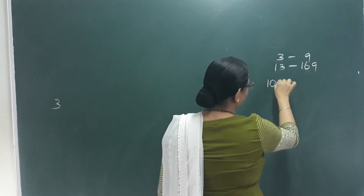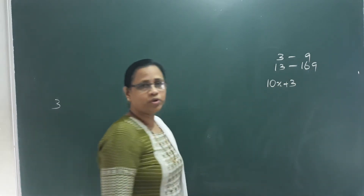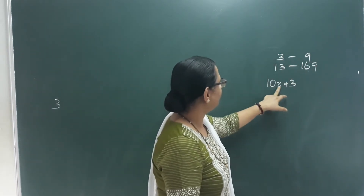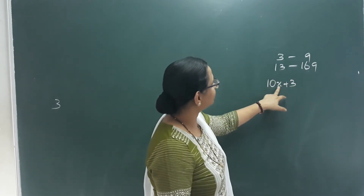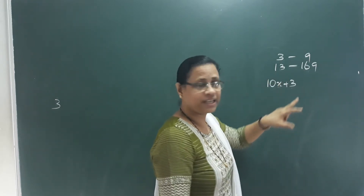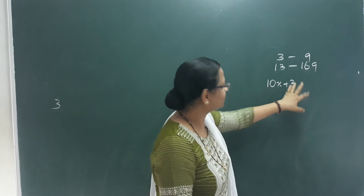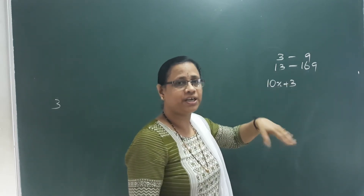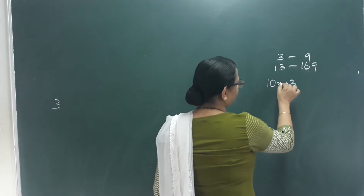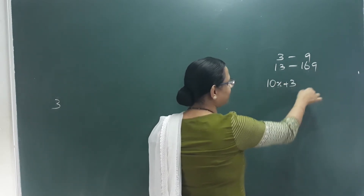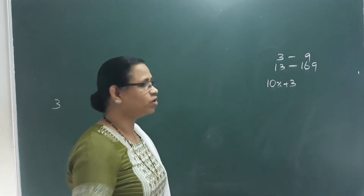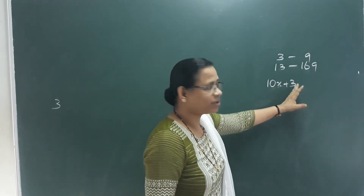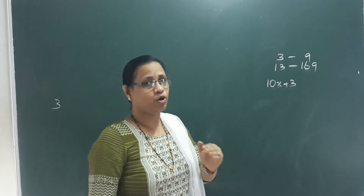What is the natural number ending in 3? We write it as 10x plus 3. When x equals 0, it's 3. When x equals 1, it's 13. When x equals 2, it's 23. This is the standard form of a 2-digit number ending in 3. Adding any values of x — x equals 9 gives 93, x equals 10 gives 103, x equals 11 gives 113.